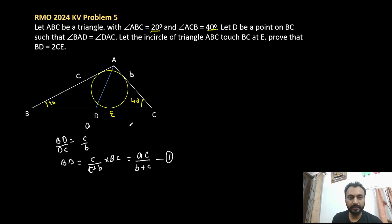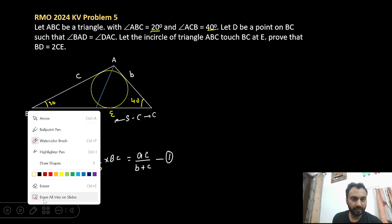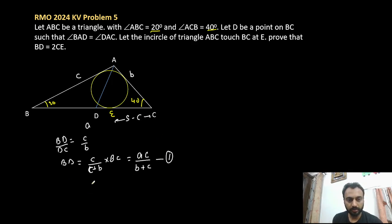Now what is the length CE? So CE's length is nothing but s minus c. As we know the distance CE is nothing but s minus c. And what is s minus c? S minus c is a plus b minus c by 2.